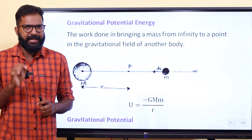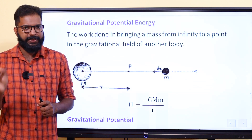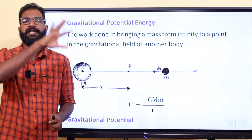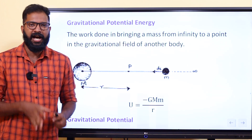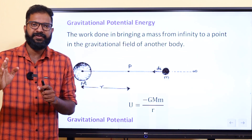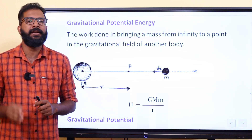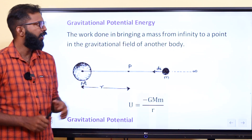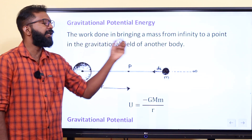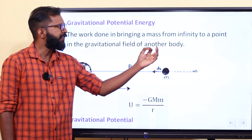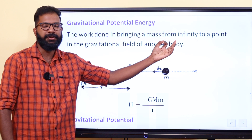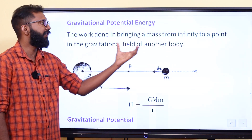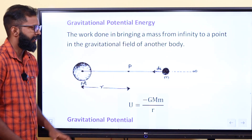If you define infinity: one object has a gravitational field, and that gravitational field extends to infinity. So, the work done in bringing a mass from infinity to a point in the gravitational field of another body — that's it.